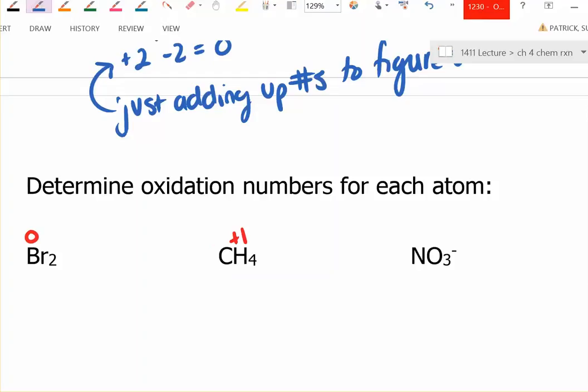Now carbon, we don't have a rule for, but we know that they're going to add up to zero, because this is a neutral compound. So just doing my math, I know that one times four is plus four for the hydrogen. So what must be the oxidation number of the carbon? It must be minus four in order for that to add up.